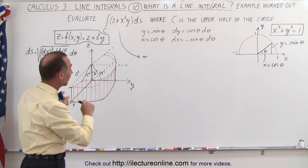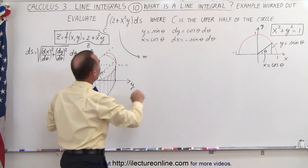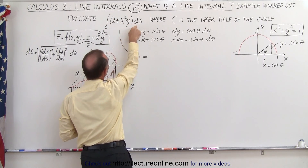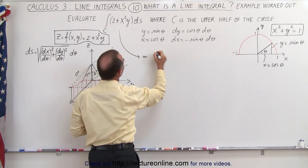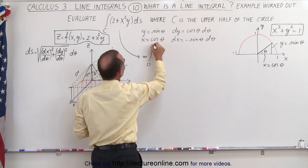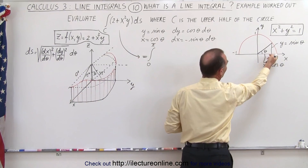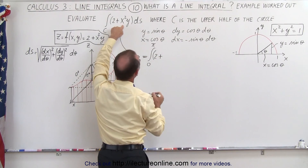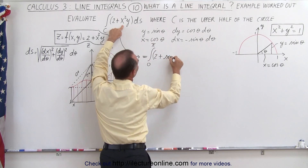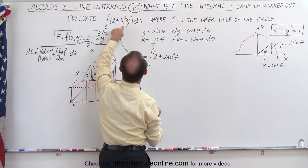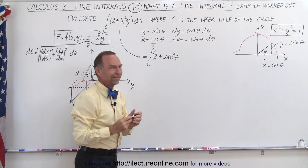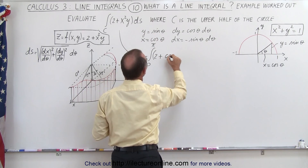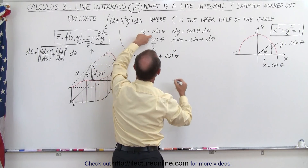So now we're going to write the integral in terms of theta rather than in terms of x and y. The line integral of the function ds integrated over the semicircle can now be written as the integral from 0 to pi — because we go halfway around the circle, the angle starts at 0 and ends at pi — and we have the quantity 2 plus cosine squared theta times y, which is the sine of theta.